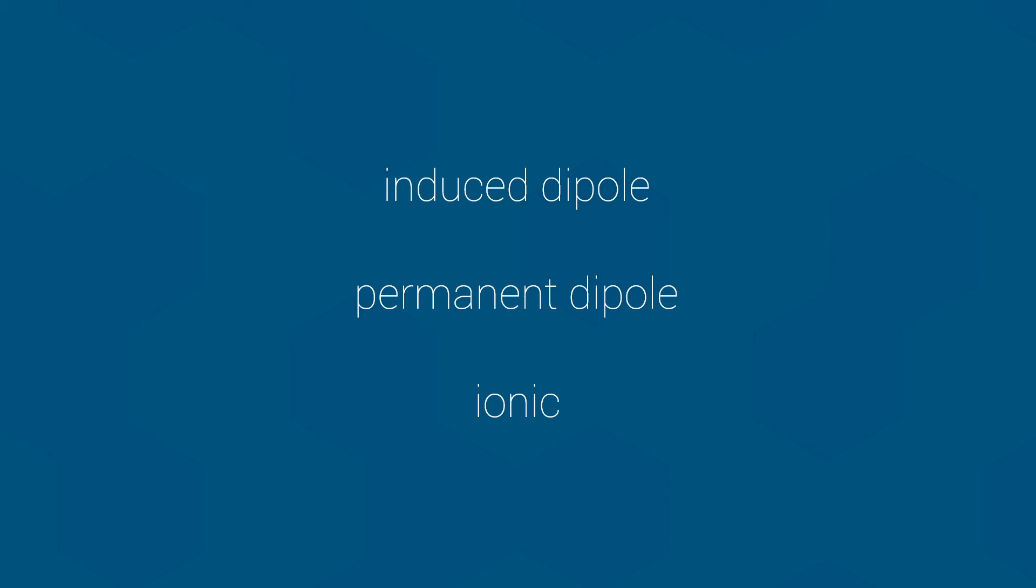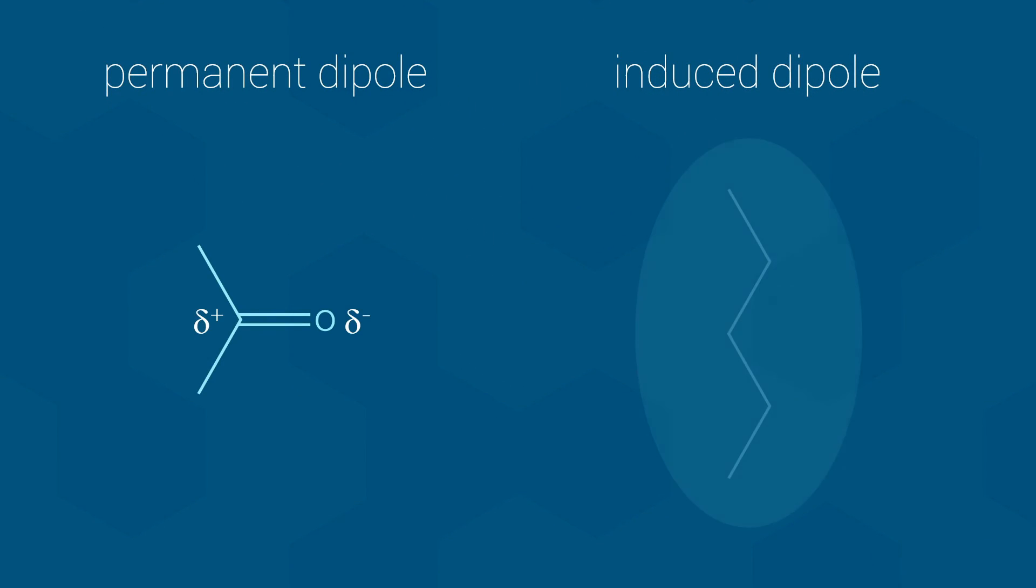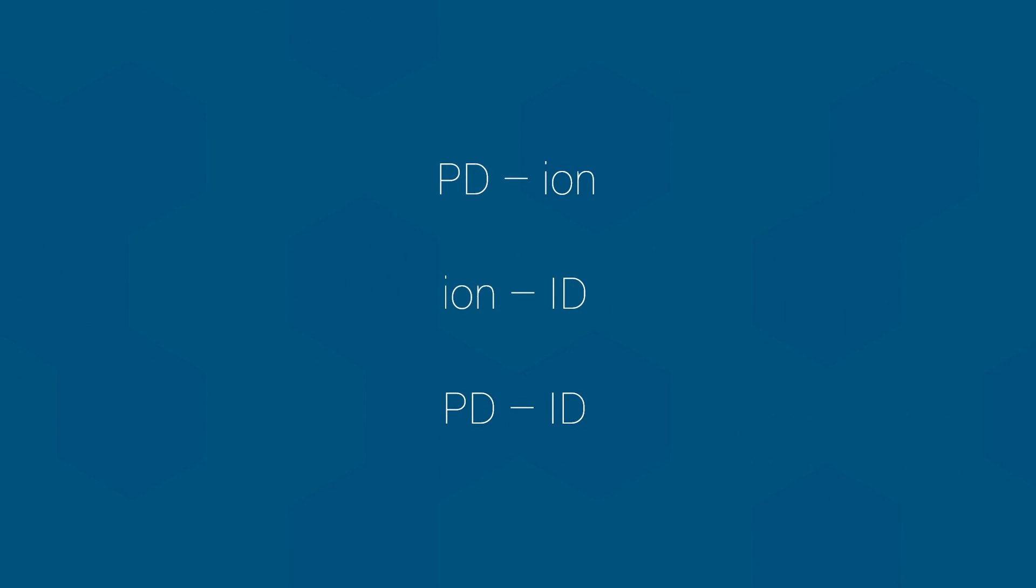However, the types can be mixed. As an example, a permanent dipole can induce a dipole in another molecule and interact with it, as shown here. This would be referred to as a permanent dipole-to-induced dipole interaction. In fact, any of the three general types of interactions can be mixed, resulting in three non-uniform types of non-covalent interactions, as shown here.